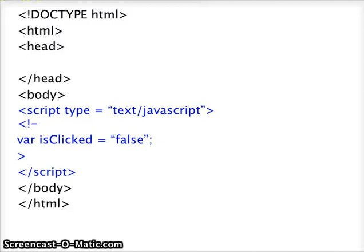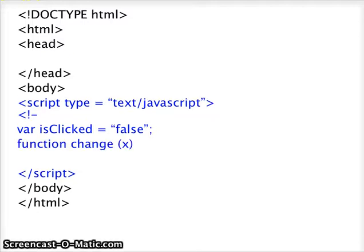Let's define our first and only variable. VAR isClicked equals false. When your mouse button is released, this variable is false. Function changeX is the name of our first and only function. The value of x will ultimately change the image that is displayed at that time. Our function will be an if-else function.